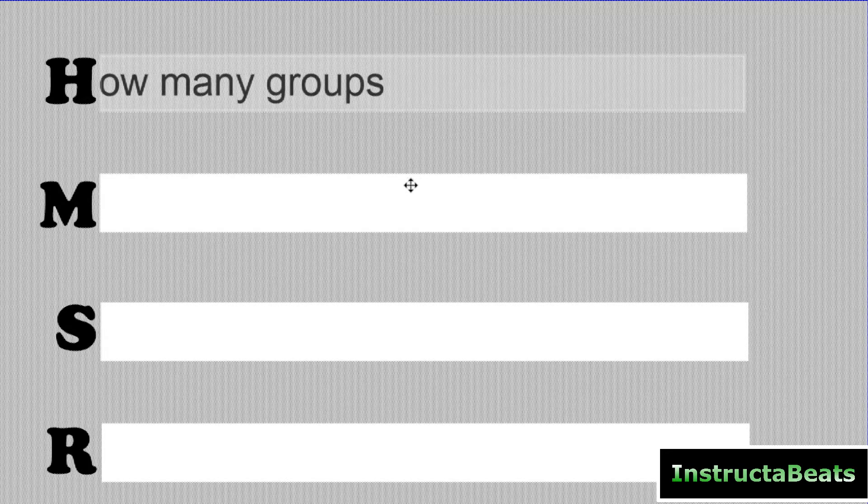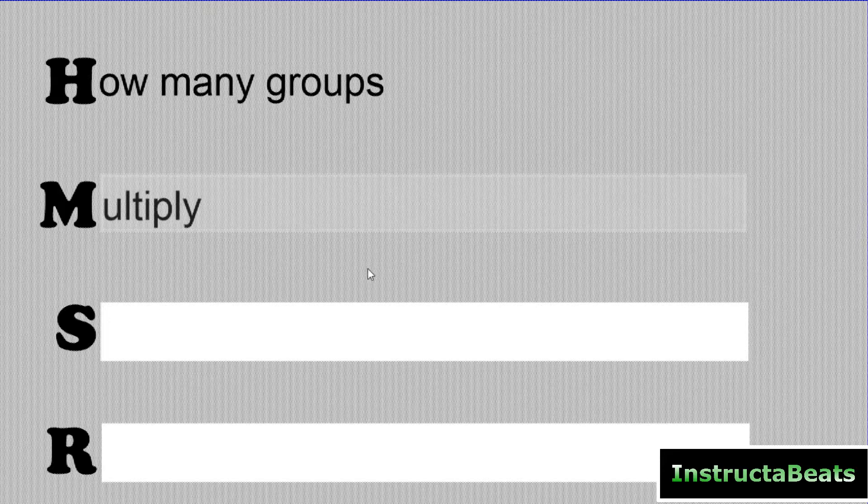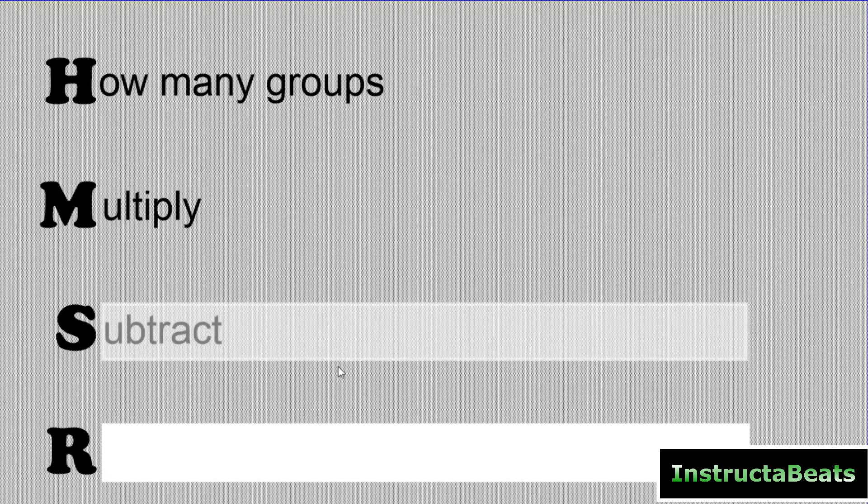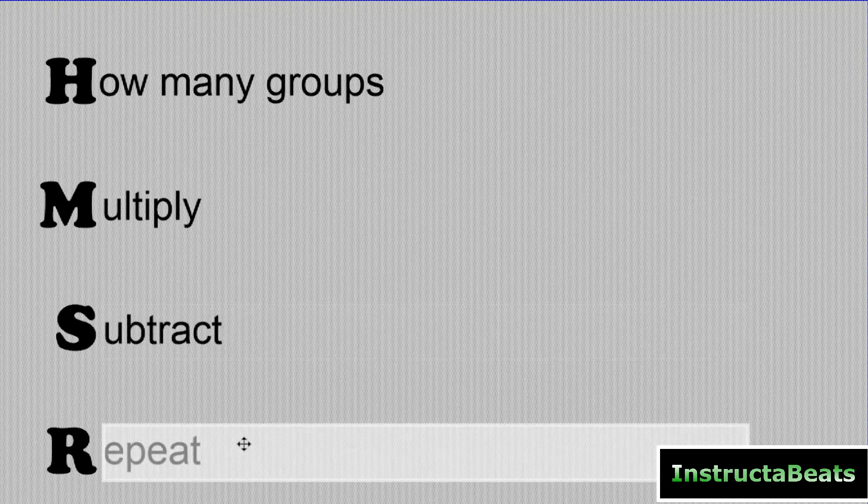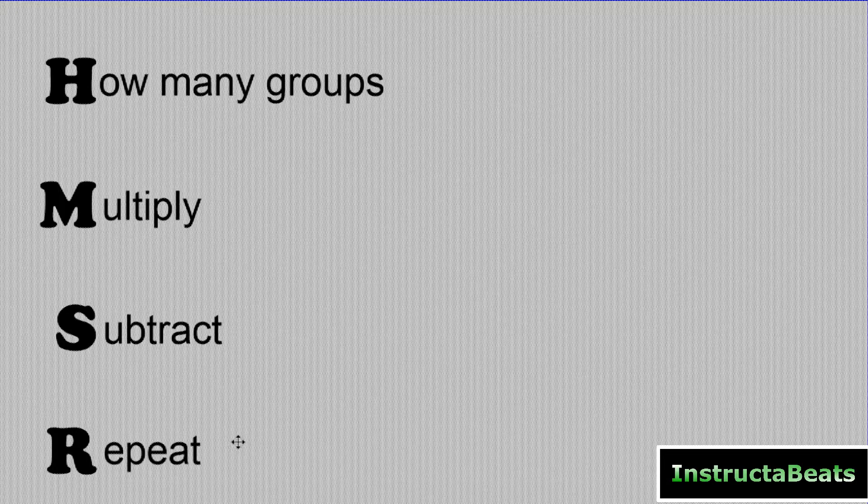Let's take a look at what HMSR means. If you haven't heard our awesome song, you should check that out. H is for how many groups. That's the first question you're going to ask yourself. M, then you're going to multiply. S, subtract. And then R, you're going to repeat until when you subtract, the number you have left is less than your divisor.